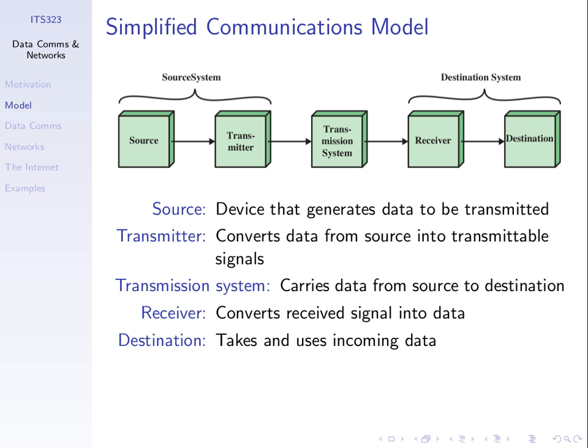The transmitter takes the data — normally represented as bits, zeros and ones — and creates some electromagnetic signal: an electrical waveform or a radio signal. The transmission system carries that signal from source to destination, either a single link or a set of links. A receiver takes the received signal and converts it back to data — for example, converting some electrical signal or waveform back to bits, zeros and ones. Then the destination block consumes that data, takes it and uses it, maybe responding.